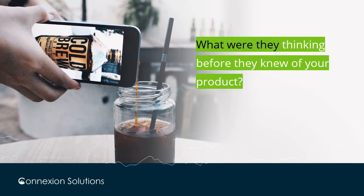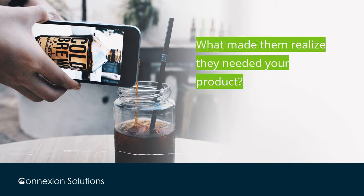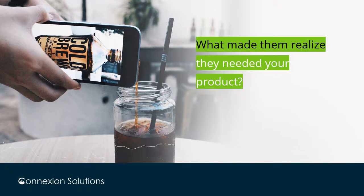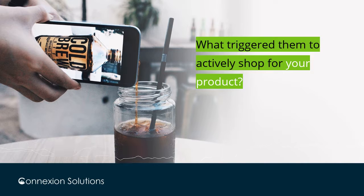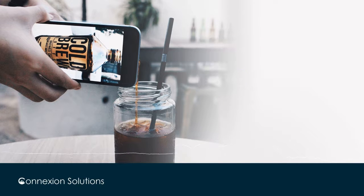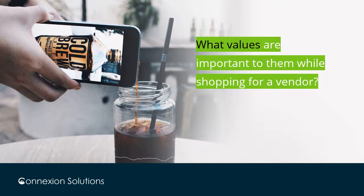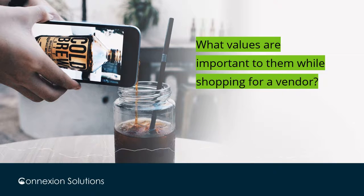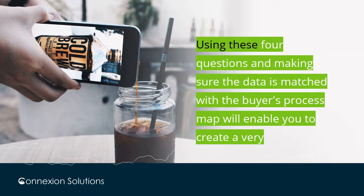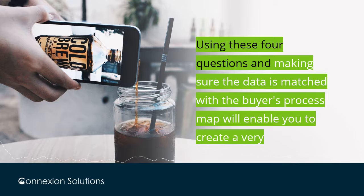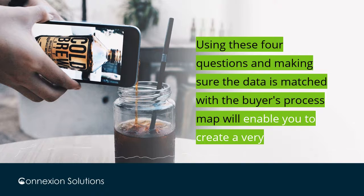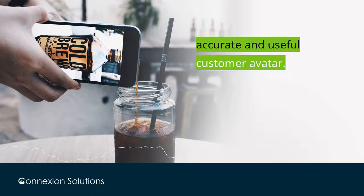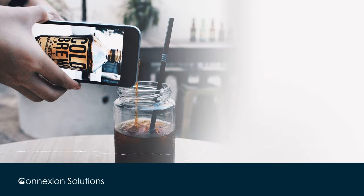The four key questions are: What were they thinking before they knew of your product? What made them realize they needed your product, or what triggered them to actively shop for it? How were they getting along without your product? And what values are important to them while shopping for a vendor? Using these four questions and making sure the data is matched with the buyer's process map will enable you to create a very accurate and useful customer avatar.